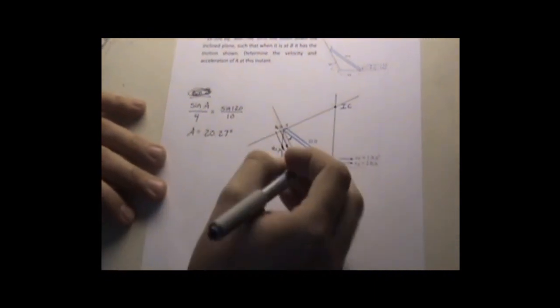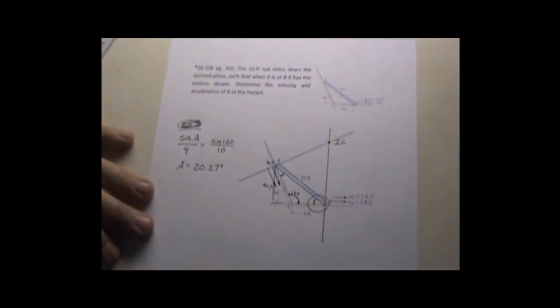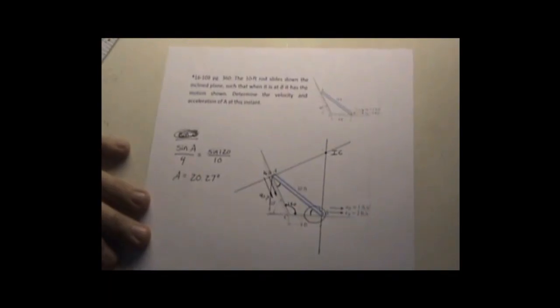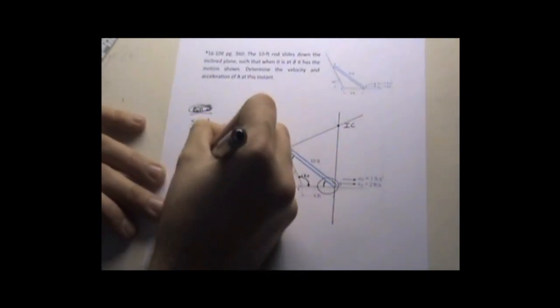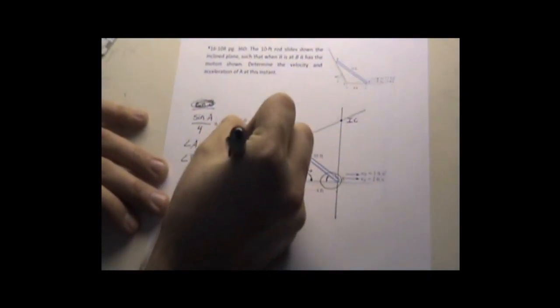The way we do that is 180 minus 120 minus this 20.27. That gives us angle B to equal 39.73 degrees.